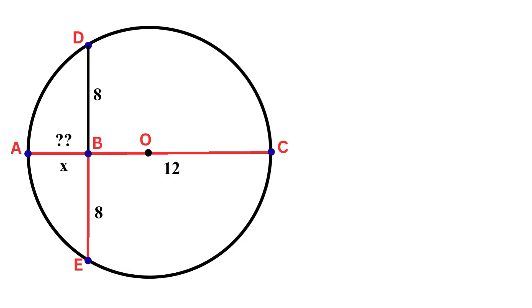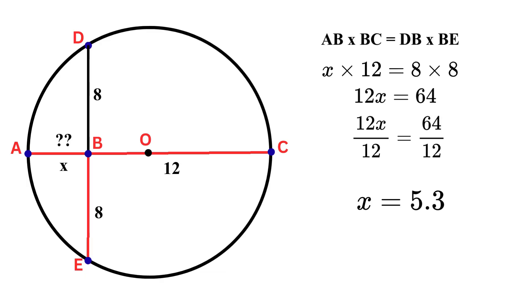So it means that the product of AB and BC equals the product of DB and BE. Let's substitute the values from the diagram, where AB is X, BC is 12, DB is 8, and BE is 8. So it becomes X times 12 equals 8 times 8. Now this side becomes 12X and the right side becomes 64. Dividing both sides by 12, we get X equals 5.3 units. So segment AB equals 5.3 units.